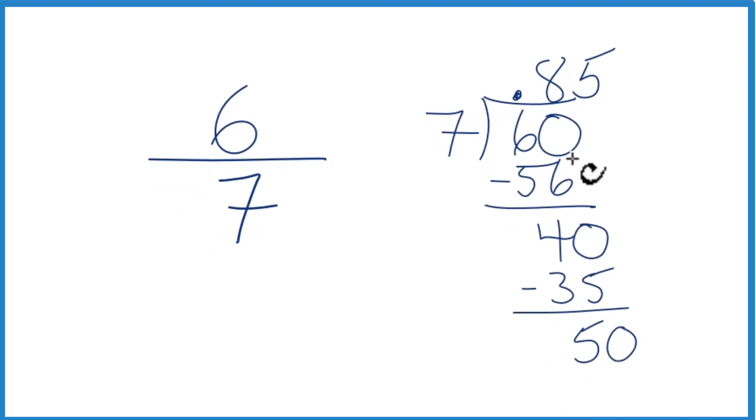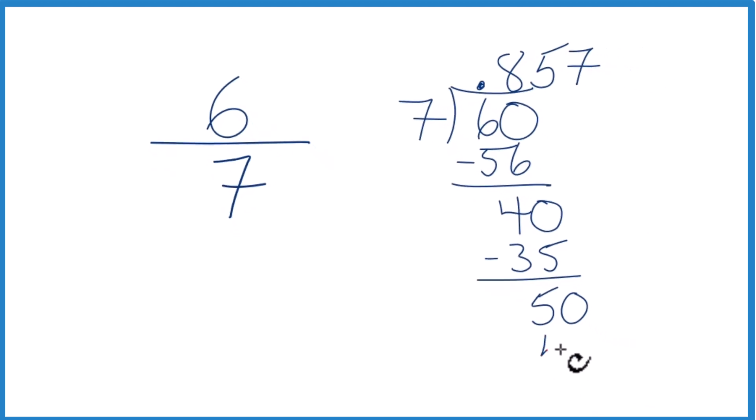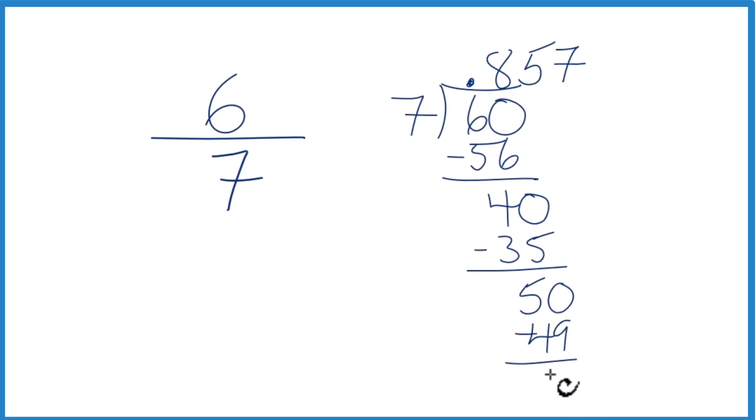Call it 50 and move over 1. 7 times 7, that's 49. We subtract, we get 1. And you can see this number keeps going.